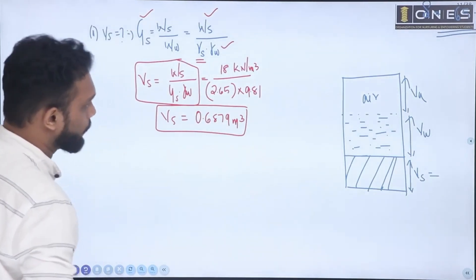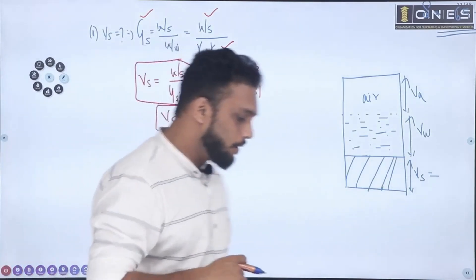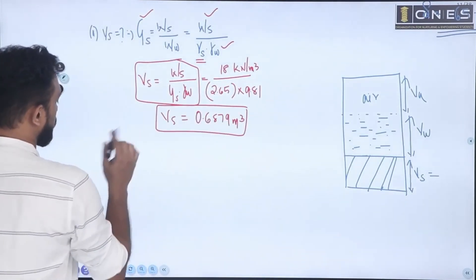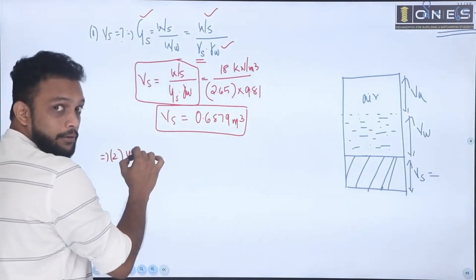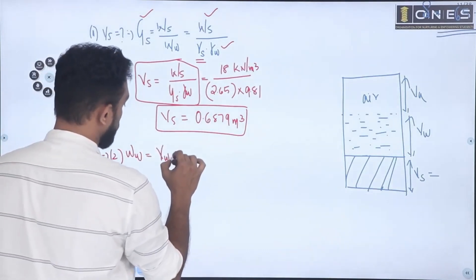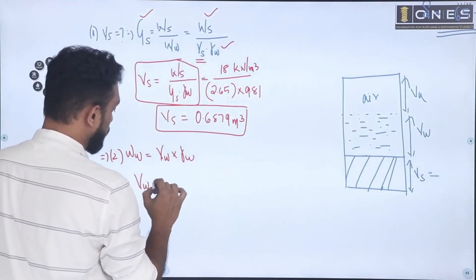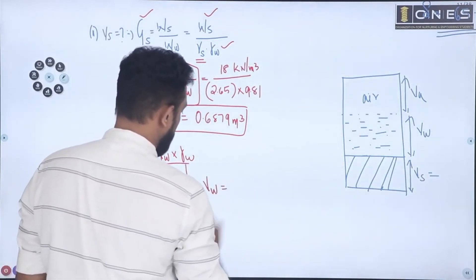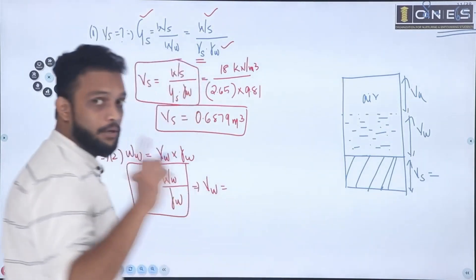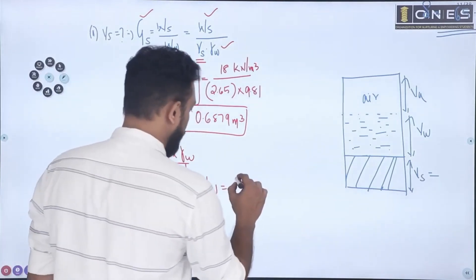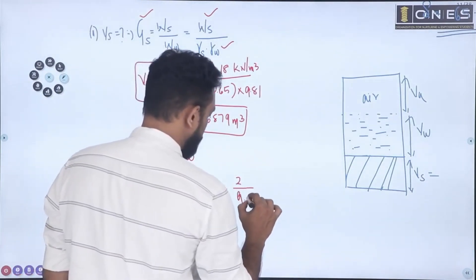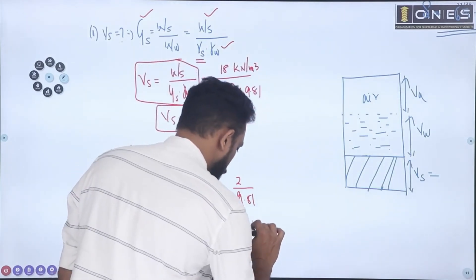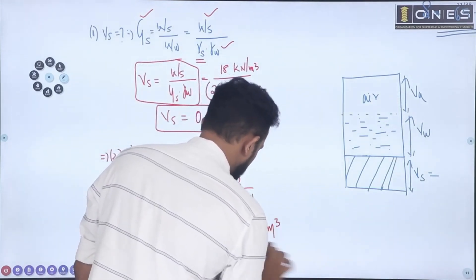Next we find Vw. Weight of water equals volume of water times gamma_w. Rearranging: Vw equals weight of water divided by gamma_w. Weight of water is 20 minus 18 equals 2 kN, divided by gamma_w which is 9.81. You will get Vw equal to 0.2041 m³. Highlight and underline that value.